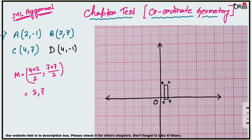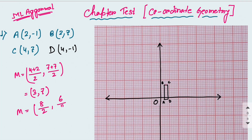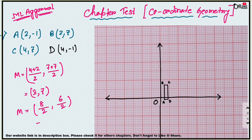Next, find the midpoint of CD. Apply the same formula: (4+4)/2 and (7+(-1))/2, which gives 8/2 = 4 and 6/2 = 3. So the midpoint of CD is (4, 3).